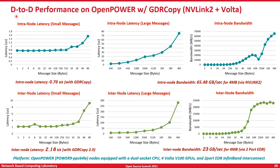This benefit is not only seen on x86 architecture. The same benefits are seen on other architectures like OpenPower with NVLink 2 interconnecting the GPUs. Here are performance numbers from an OpenPower system with NVLink 2, Volta V100 GPUs, and two ports of EDR InfiniBand: intra-node latency of around 0.76 microseconds, inter-node latency of 2.18 microseconds, intra-node bandwidth of 65.48 gigabytes per second, and a peak inter-node bandwidth of 23 gigabytes per second.